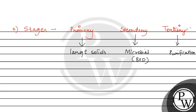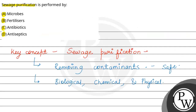अब हम बात करते हैं options के बारे में। सबसे पहले हैं microbes — यह आपका correct answer है, क्योंकि यह primary agent होता है जो biological process perform करते हैं, जो essential होता है for breakdown of organic pollutants in sewage. Fertilizers वो substance होता है जो हम soil में add करते हैं to enhance plant growth — यह involved नहीं होता है in sewage purification.